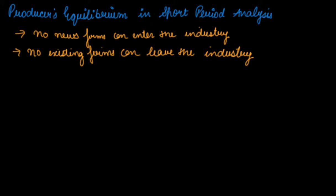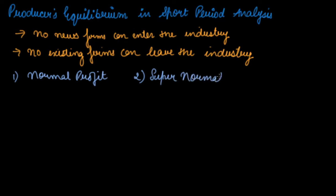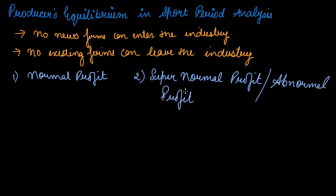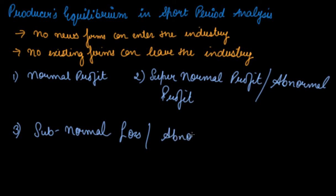In the short run these two things are not possible. So what happens — there are three situations. Number one: you earn normal profit. Number two: supernormal profit, also called abnormal profit. And number three: subnormal loss, also called abnormal loss. These are the three situations the producer faces in short period analysis.